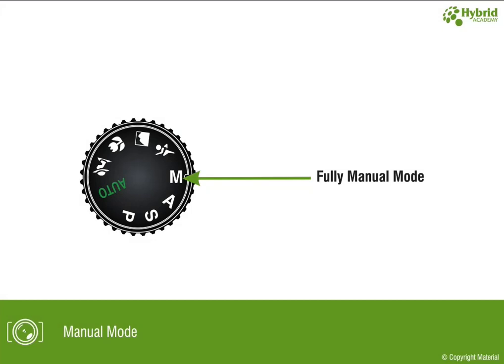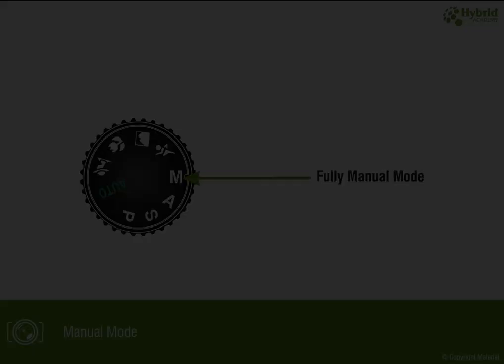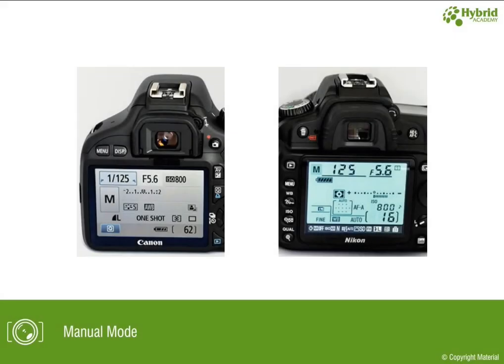Manual mode is accessible by switching the dial to M, which stands for manual. Nowadays this mode is also available in smartphone cameras, and you can customise your mobile photos to quite an extent with this mode. Once switched to this mode, you will see that all options of the camera are enabled to be edited, and you can change each and every setting as per your own choice.